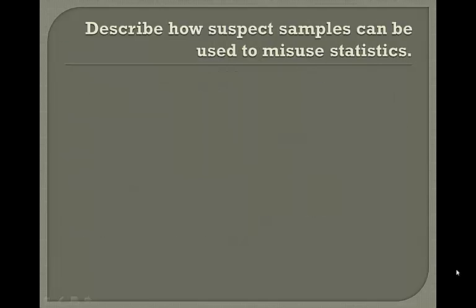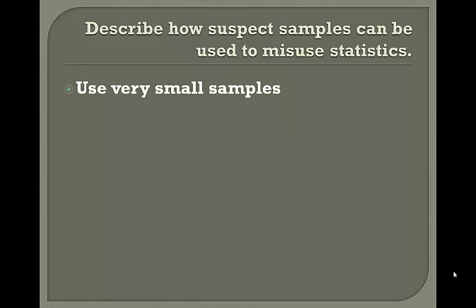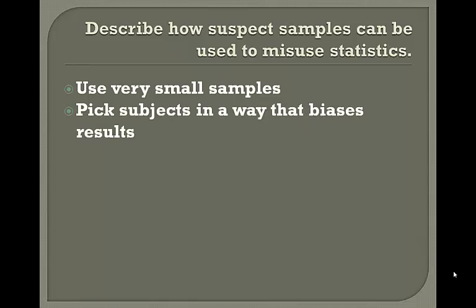One of the things I read mentioned G-I-G-I — garbage in, garbage out. The first area is suspect samples. If you use very small samples, you are not going to get very good representation of the population at large. They also can pick their subjects in a way that will bias the results — if you pick all skinny people and try to do a weight loss product or something like that, it can really affect it.